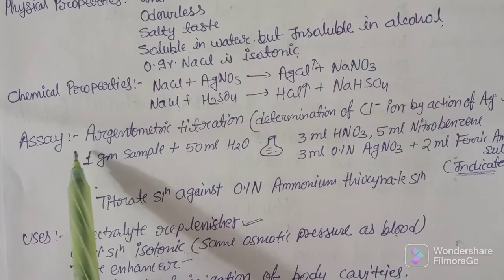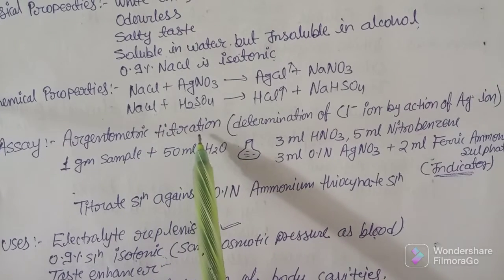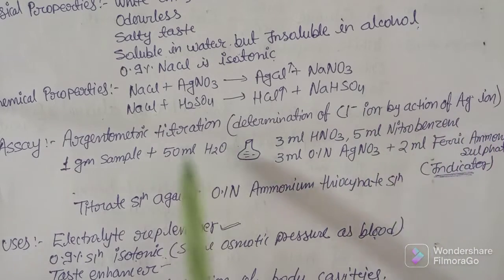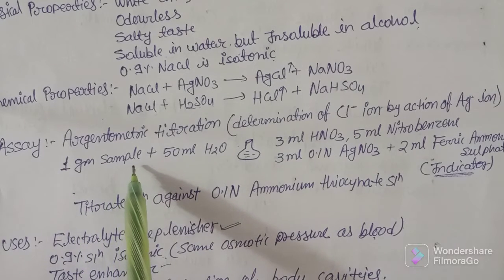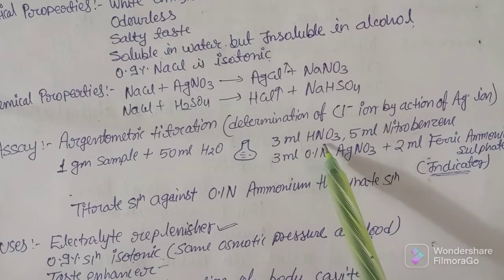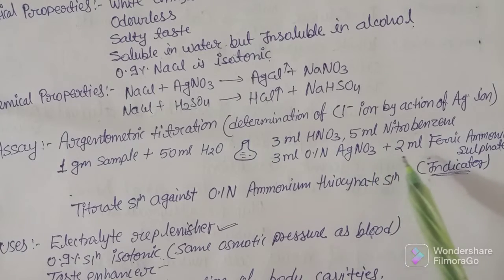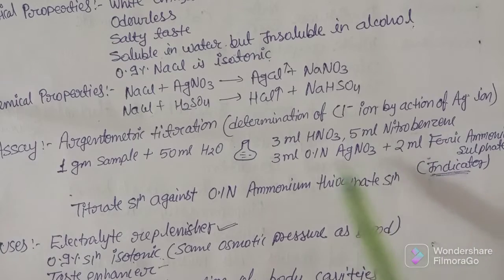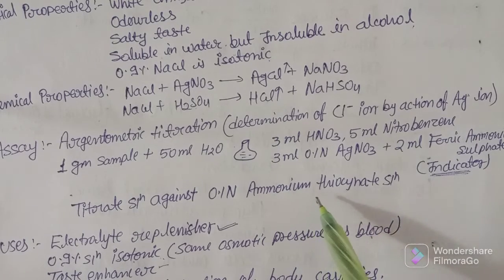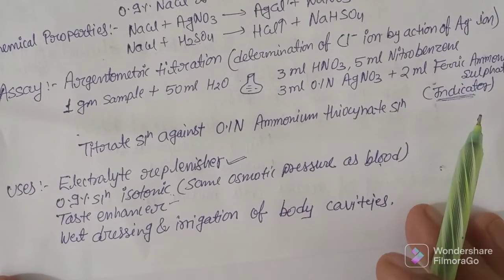Coming to the assay: we use argentometric titration, which is the determination of chloride ion by the action of silver ion. In this assay, we take one gram of the sample, dissolve it in 50 ml of water in a stoppered conical flask, then add 3 ml nitric acid, 5 ml nitrobenzene, and 3 ml of 0.1 normal silver nitrate. The indicator used is 2 ml of ferric ammonium sulfate, and we titrate against 0.1 normal ammonium thiocyanate solution to estimate the presence of NaCl.